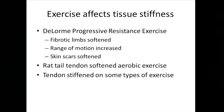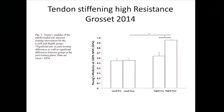Exercise affects tissue stiffness. DeLorme developed a progressive resistive exercise program back in the 1940s and noticed that fibrotic limbs softened, range of motion increased, and even skin scars softened. There's data that a rat tail tendon will soften when rats are placed on aerobic exercise. If you exercise one way, tendons get stiffer; if you exercise another way, they don't. With high resistance training, tendons get stiffer. At about 60% of maximum resistance, tendons do not get stiffer — so exercising less hard may keep tissues less stiff, which may be beneficial.